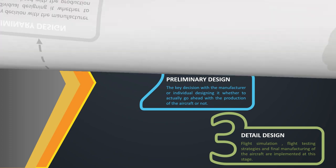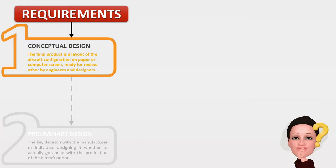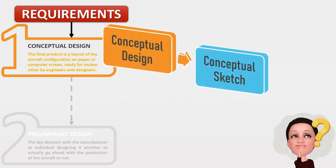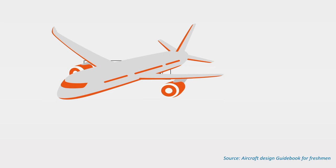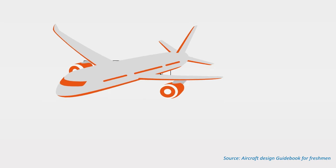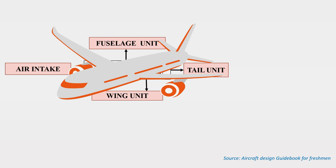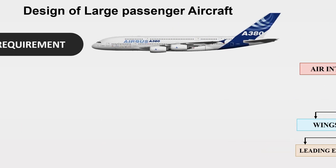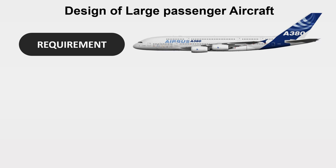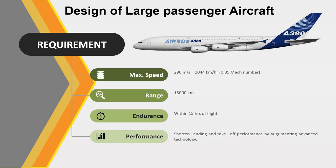The first conceptual design step entails the conceptual sketching of a variety of possible aircraft configurations that meet the required design specification, such as the wing unit, tail unit, fuselage unit, and air intake unit. For example, if I am going to design a large passenger aircraft with a maximum speed of 290 meters per second, that is approximately Mach 0.8.